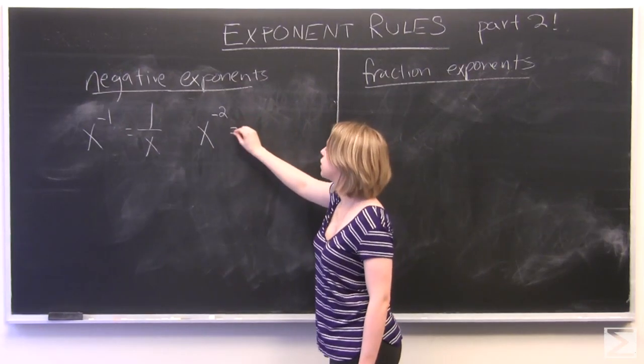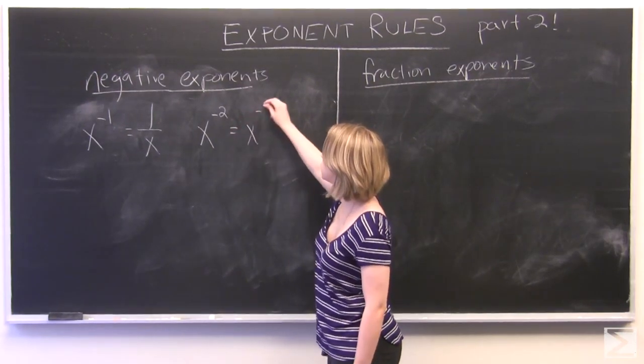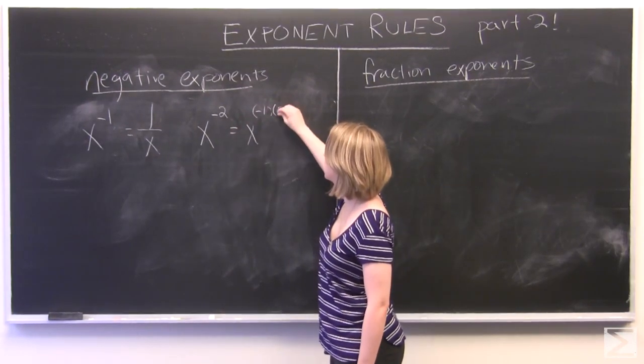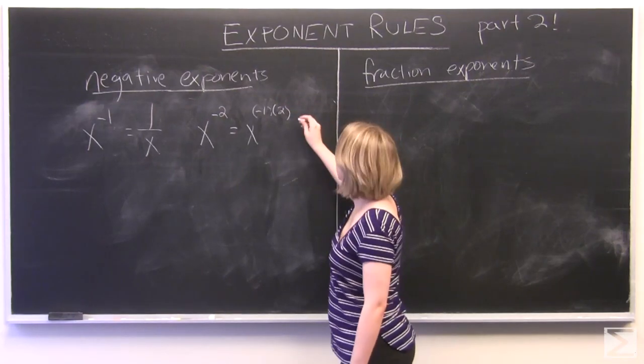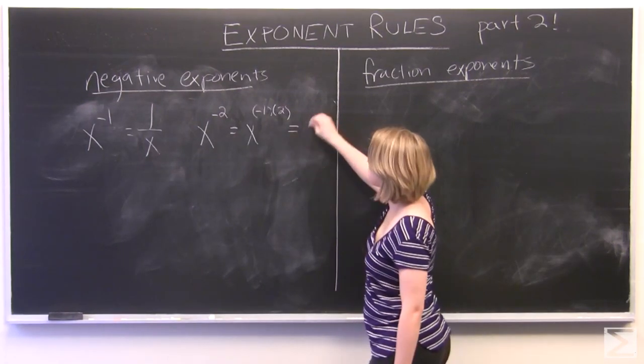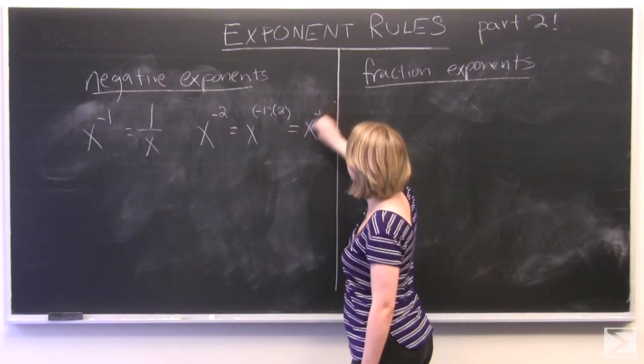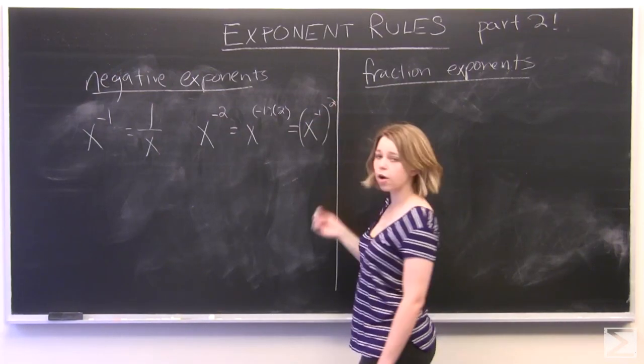x to the power of negative 2 can be expanded to x to the power of negative 1 times 2. We know from our first video that this can be rewritten as x to the power of negative 1 to the power of 2.